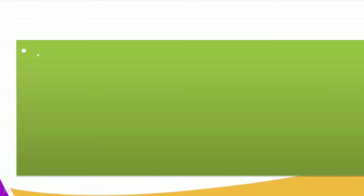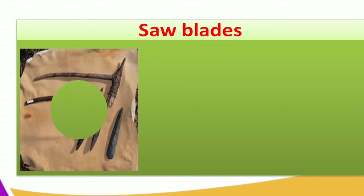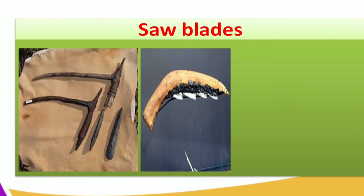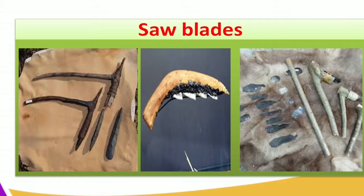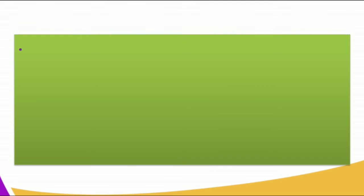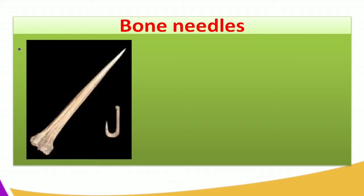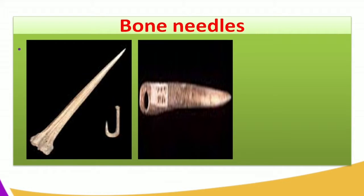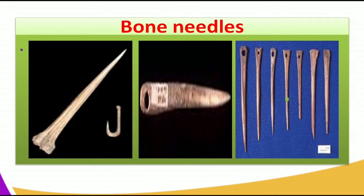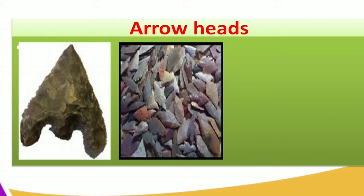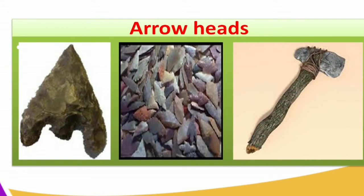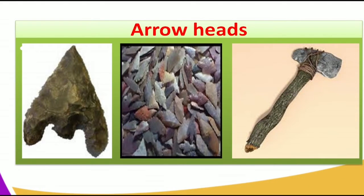Another example of the composite tool is the saw braid, which was used to knit cloth, made of animal bones or even wood. We also have the bone needle, used to knit cloth — not for cutting — made of bones. Another composite tool is the arrowhead, fitted using wood to make the axe or arrowhead.